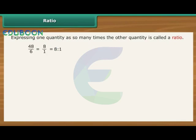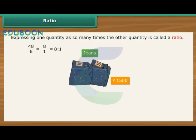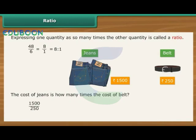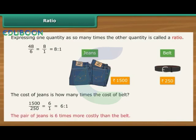Let us look at another example of ratio. Tushar bought a pair of jeans for Rs. 1500 and a belt for Rs. 250. The cost of jeans is how many times the cost of belt? To calculate the ratio, first divide 1500 by 250, which is the same as 6 divided by 1. Express it as a ratio, that is 6 is to 1. Therefore, we can say that the pair of jeans is 6 times more costly than the belt.